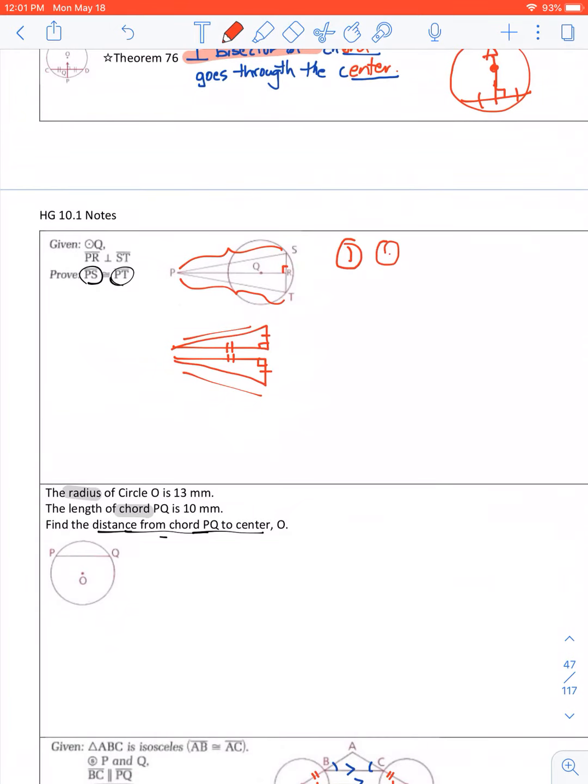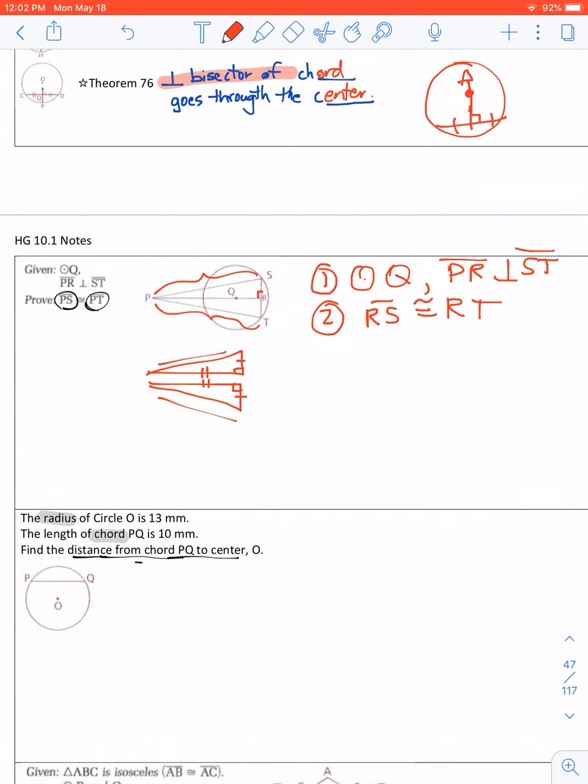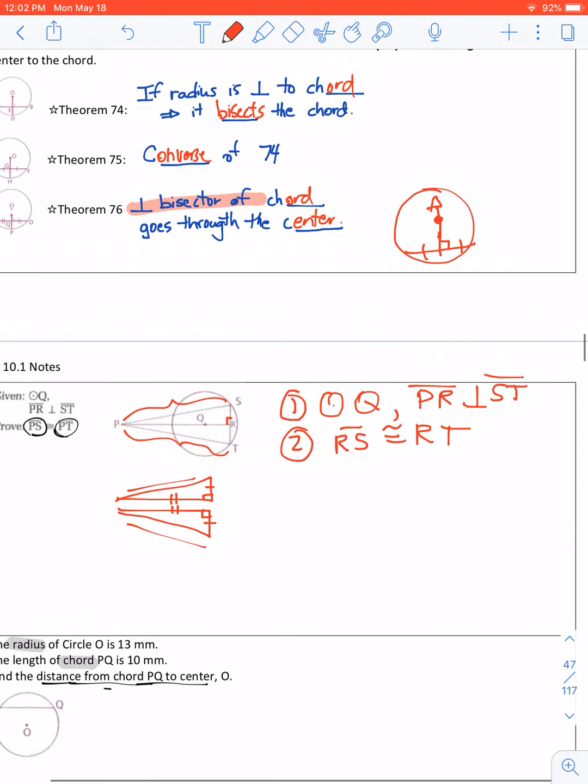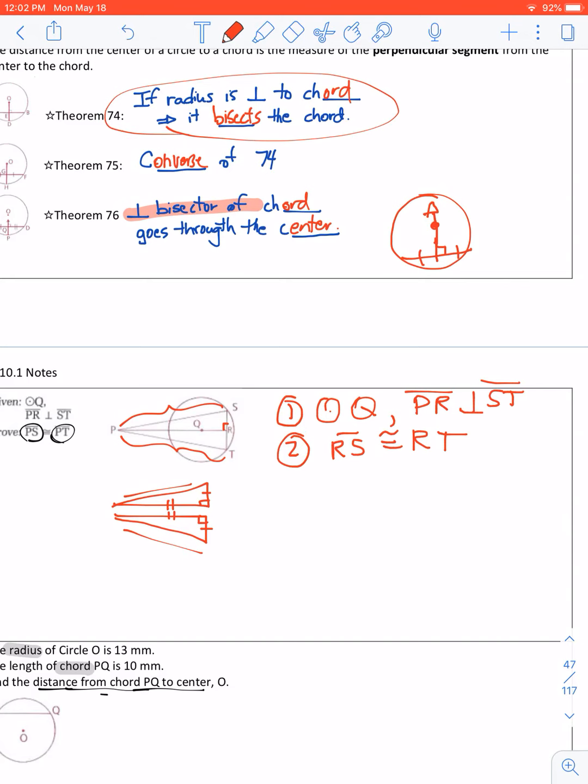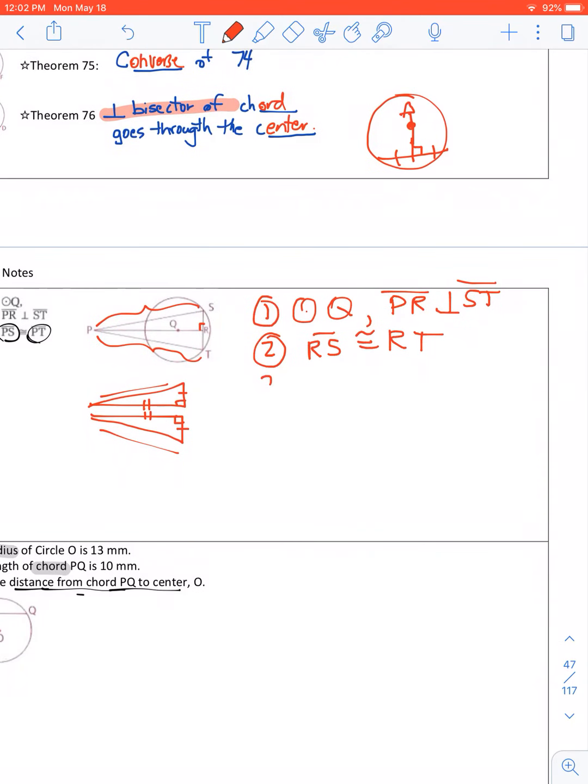Again, we're given circle Q and also that PR is perpendicular to ST. Number two, we are given now that, or we can conclude that RS is congruent to RT. And that's because of the theorem that we just quoted, which is that if you have a perpendicular to a chord, then it bisects the chord. Number three, angle PRS is congruent to angle PRT.